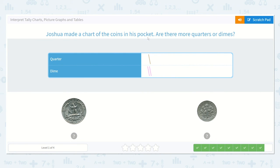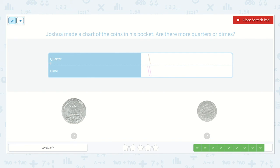Joshua made a chart of the coins in his pocket. Are there more quarters or dimes? Let's follow it across. I see quarter here, and this is how many quarters. And I see dime here, and this is how many dimes. How many quarters do they have? Yes, just one. What about how many dimes? One, two. Good. So I see two different coins down here. I know that they have more dimes because two is greater than one.